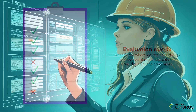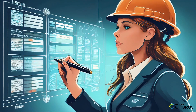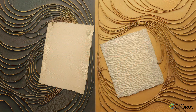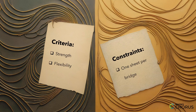Engineers use evaluation matrices every day to make sure they choose the best possible designs for their projects. Let's check out some examples. First up, let's say you're choosing between two types of paper for your bridge. You might score each type on criteria like strength and flexibility, keeping in mind your constraint — only using one sheet per bridge.